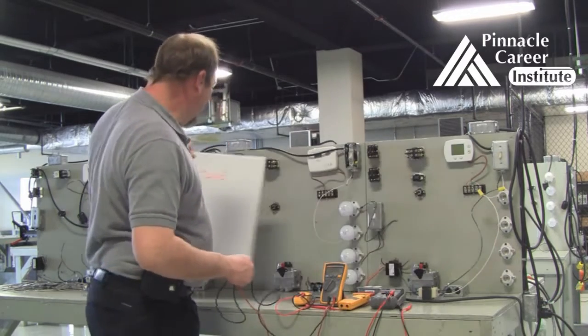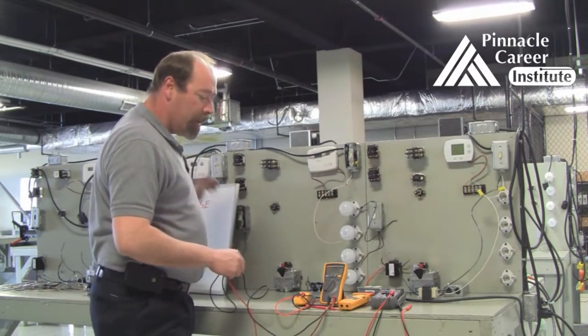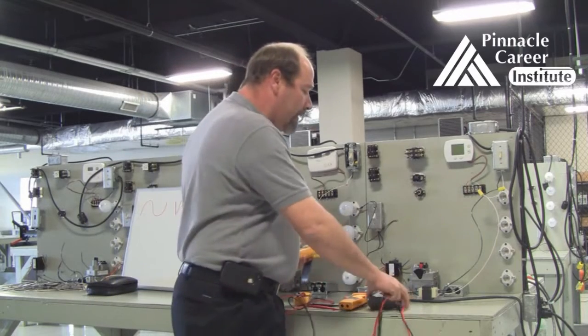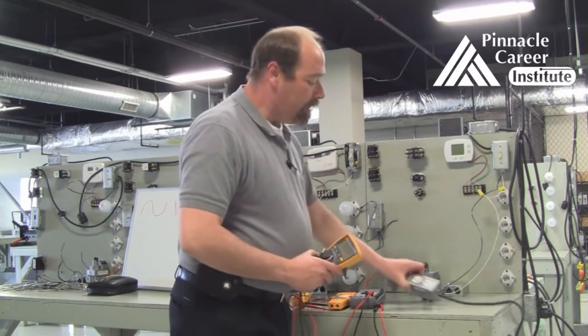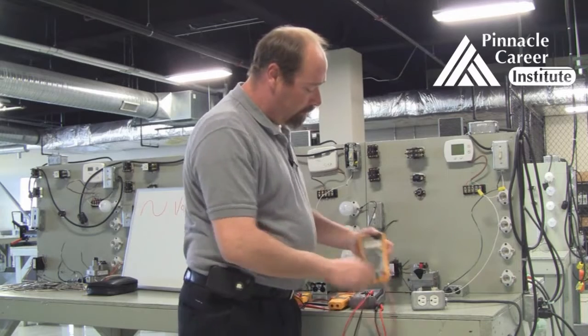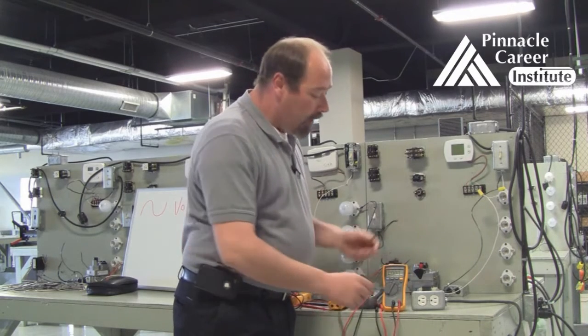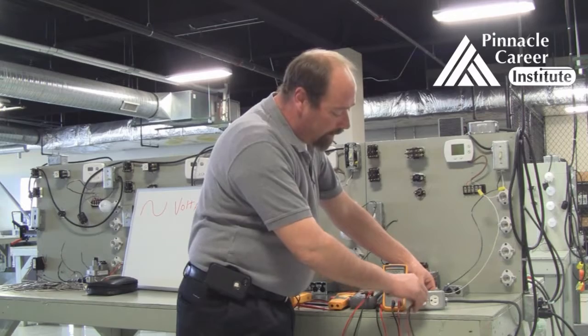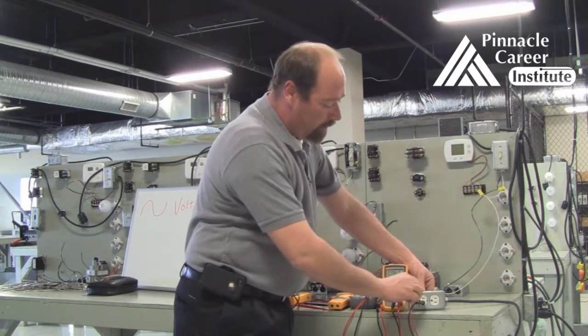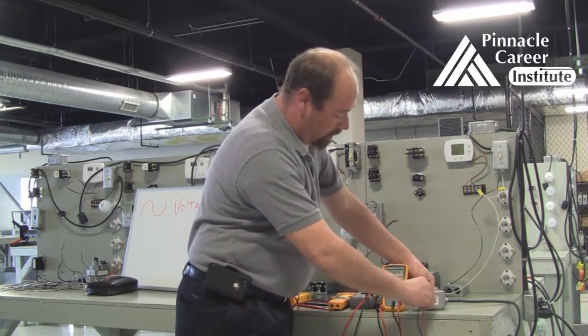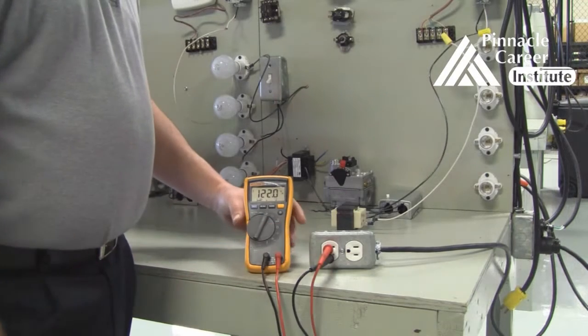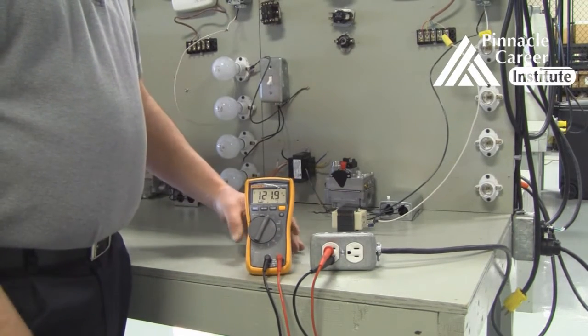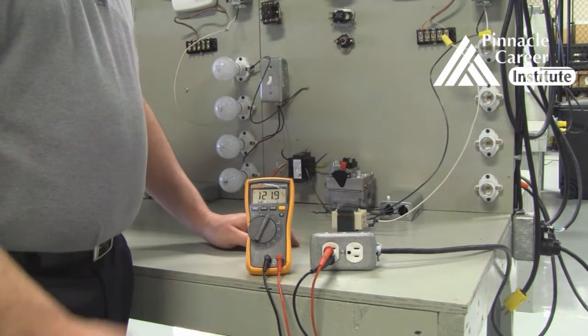Now, in order to test a particular voltage such as an outlet, you are going to select the outlet, select your voltage, and you're going to place your meter leads into the outlet. As you can see by testing this, we have 120 volts. That means there's power available to the outlet.